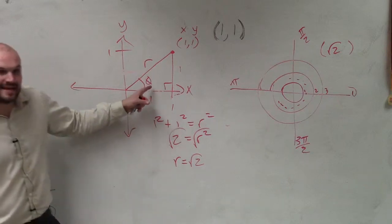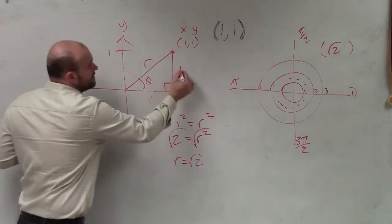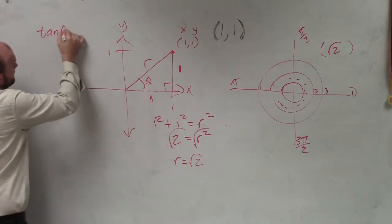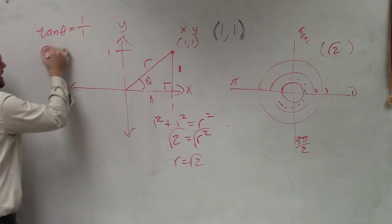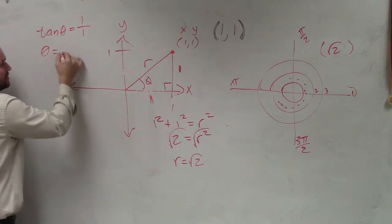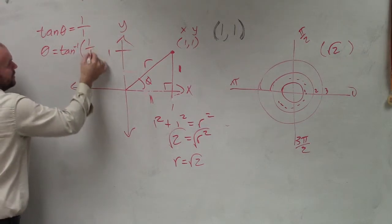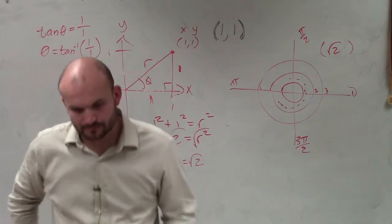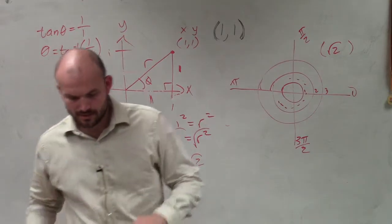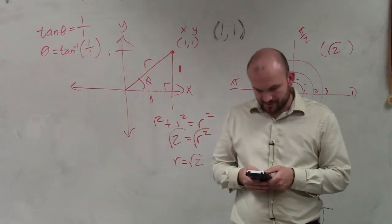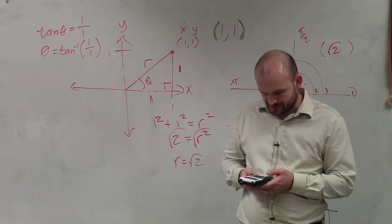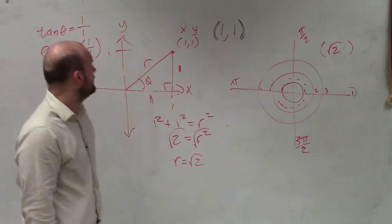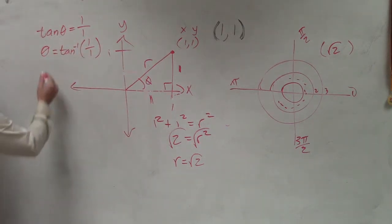Now we need to be able to figure out what theta is. Again, the only thing we know is the opposite side and the adjacent side. So we can say tangent of theta equals 1 over 1. So theta, my angle, is equal to the tangent inverse of 1 over 1. So now I take my lovely calculadora, and make sure that I'm going to be using radian mode, and I say inverse tangent. Oh, I don't even need to do this. So I'm taking the inverse tangent of 1, right?